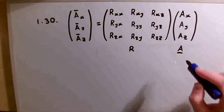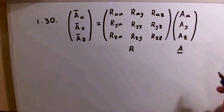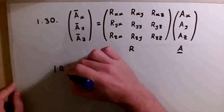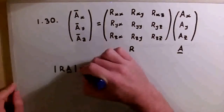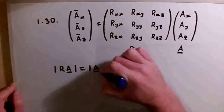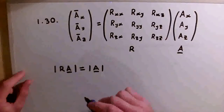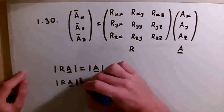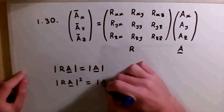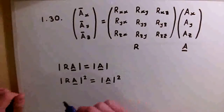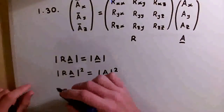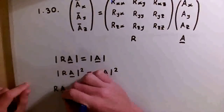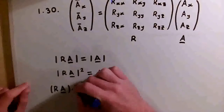We want the length of A to be preserved under this matrix multiplication, so we're saying that the magnitude of R times A is the same as the magnitude of A itself. This is equivalent to saying the magnitude squared of R times A equals the magnitude squared of A. We can write these squares as dot products, so this is R times A dotted with R times A.